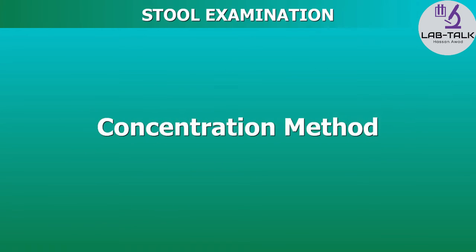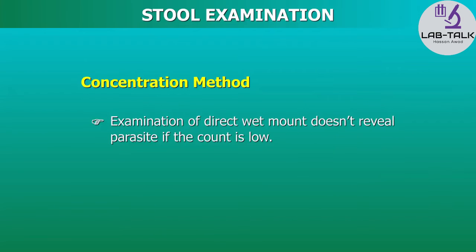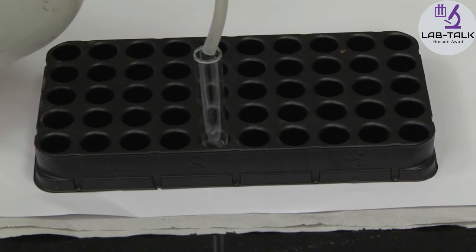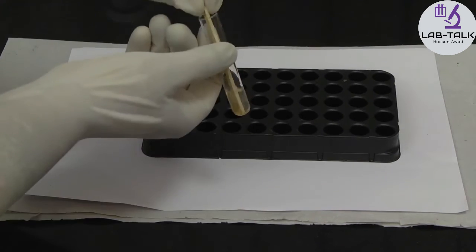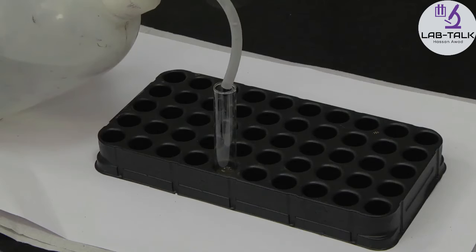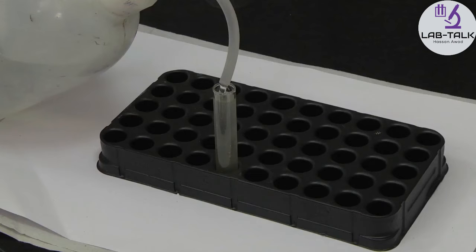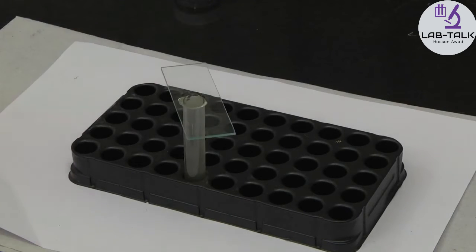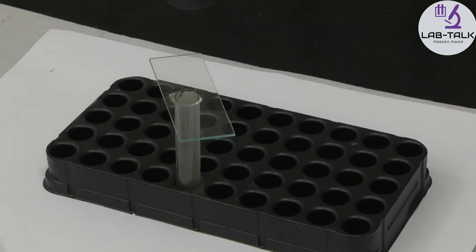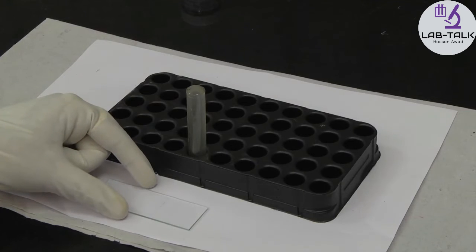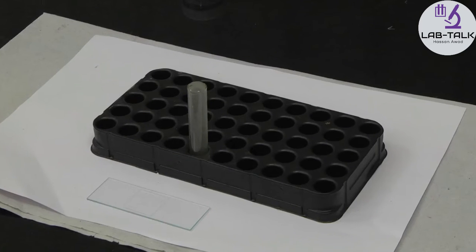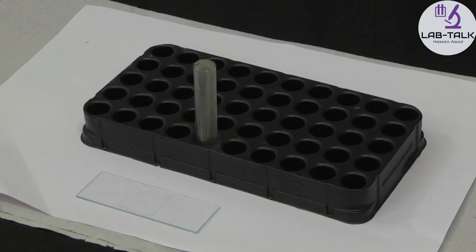Concentration method: If the number of parasites in the stool specimen is low, a direct wet mount may not reveal them, and hence the stool should be concentrated. Fill a test tube half with saturated saline. Add a small amount of stool and emulsify well with an applicator stick. Fill the tube to the brim with saturated saline. Cover with a glass slide touching the surface of the mixture and leave undisturbed for 15 minutes. Remove the slide without spillage, place on a flat surface, cover the smeared area with a cover slip taking care to avoid air bubbles, and examine under the microscope.